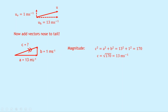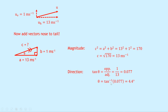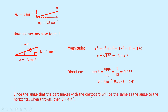To find the direction, we label the angle theta at the starting point of the resultant vector. Using tan theta equals opposite over adjacent: tan theta equals 1 over 13, which equals 0.077. Taking inverse tan gives theta equals 4.4 degrees. Since the angle the dart makes with the dartboard is the same as the launch angle to the horizontal — as stated in the theory video, a projectile lands at the same angle it was launched — theta is 4.4 degrees.